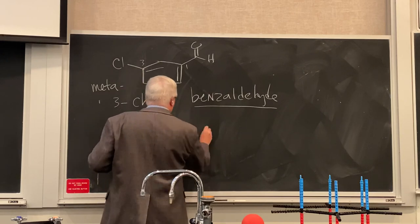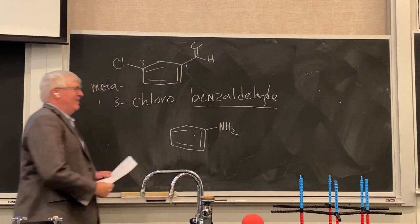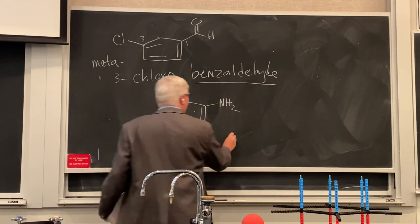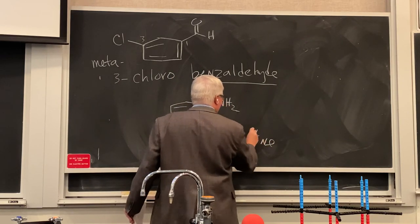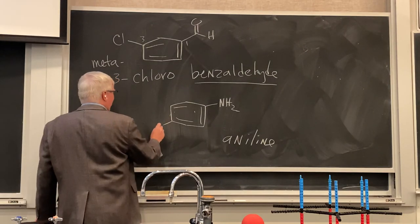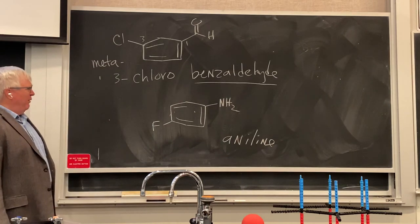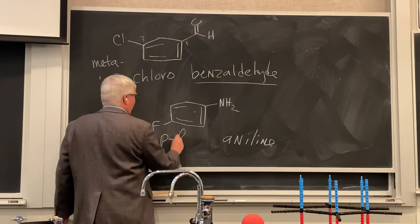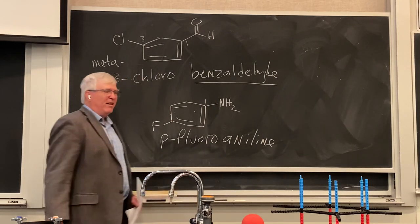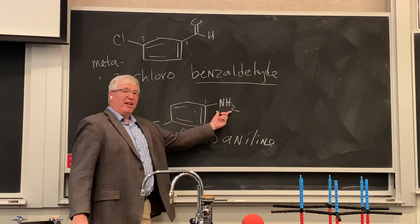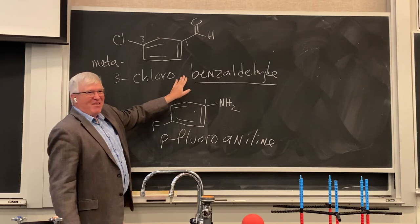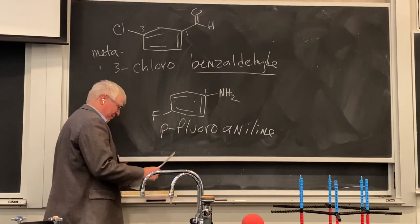Aminobenzene has a special parent name - aniline. Any aminobenzene is named as an aniline. Adding a fluoro group in the para position gives para-fluoroaniline. When the substituent is part of the parent name, it's always assumed to be position 1, so you don't need to write '1-aniline.' That would be redundant - we won't take off points if you include it, but it's unnecessary.